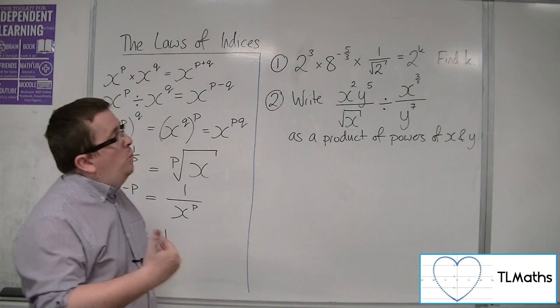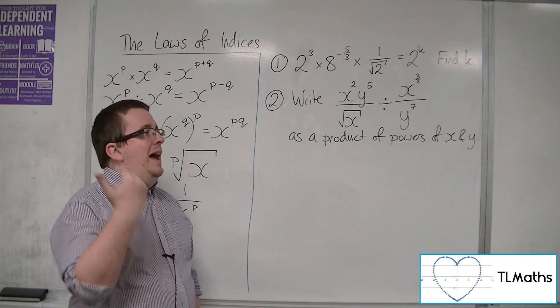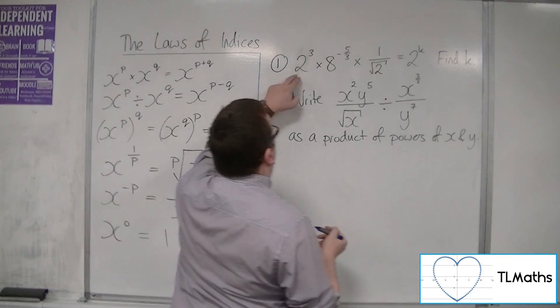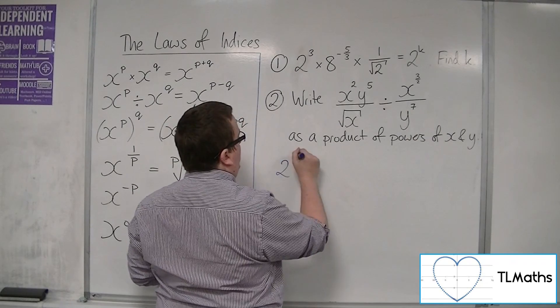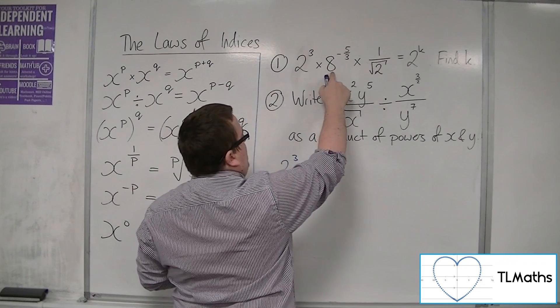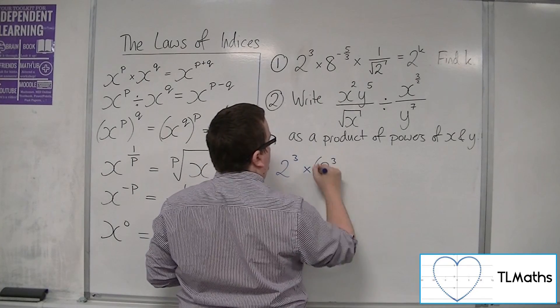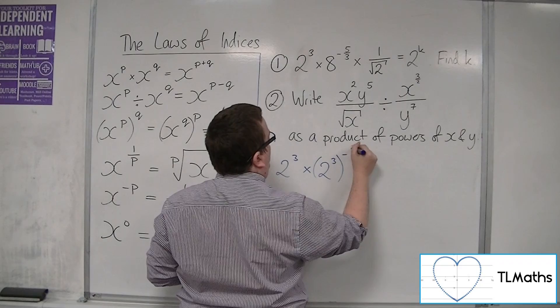What you want to do here is really write everything as 2 to the something. We've got 2 cubed, that can stay the same. The 8 I know is 2 cubed, so that's 2 cubed to the minus 5 thirds.